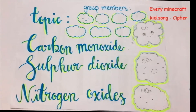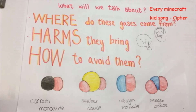Today we're introducing you to four gases: carbon monoxide, sulfur dioxide, nitrogen monoxide and nitrogen dioxide. We're going to explain where these gases come from, the harms they bring, and how to avoid them.